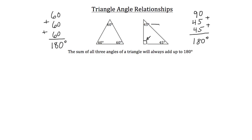Another special thing to note about this right triangle is that with any right triangle, the two angles of the leg will always be complementary. Complementary means that they're going to add up to be 90 degrees. Because this is already a 90 degree angle, 180 degrees minus that initial 90 degrees leaves only 90 degrees for the other two angles, meaning they will always add together to be 90 degrees — complementary.